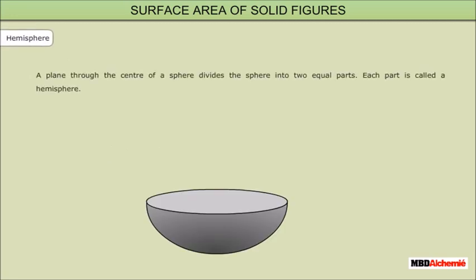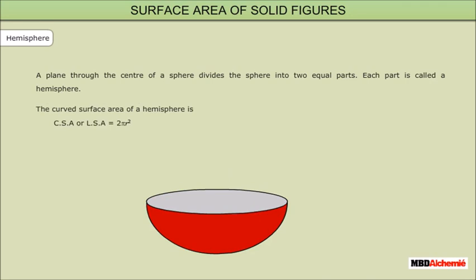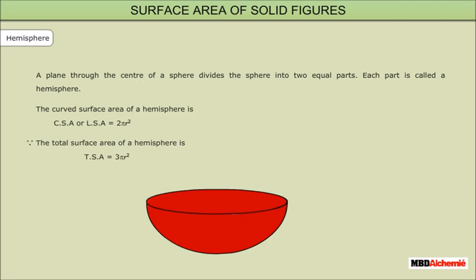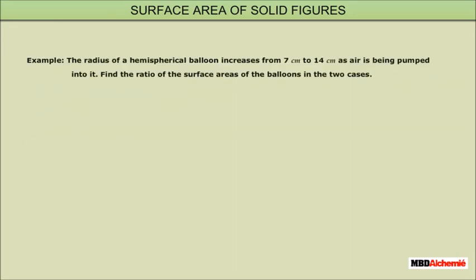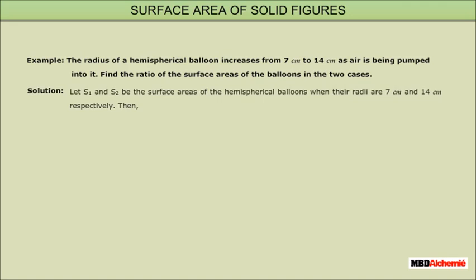Hemisphere: A plane through the center of a sphere divides it into two equal parts, each called a hemisphere. The curved surface area (CSA or LSA) of a hemisphere is 2πr². The total surface area (TSA) of a hemisphere is 3πr². Example: The radius of a hemispherical balloon increases from 7 cm to 14 cm as air is pumped in. Find the ratio of the surface areas in the two cases. Solution: Let S1 and S2 be the surface areas when radii are 7 cm and 14 cm respectively. S1 = 3π(7²) and S2 = 3π(14²). The ratio S1 : S2 = 1 : 4.